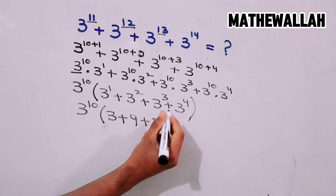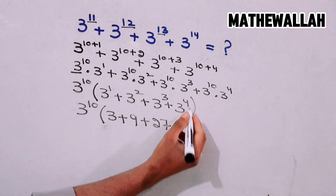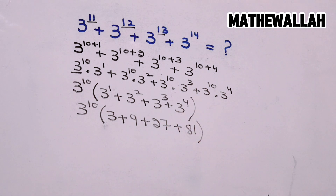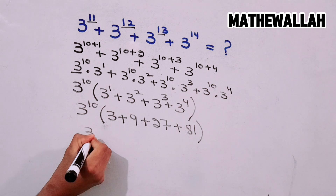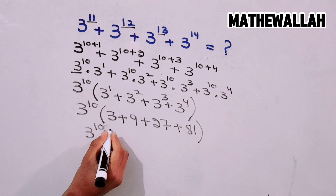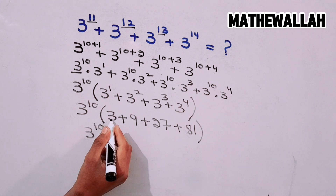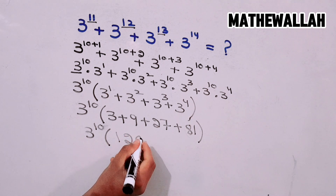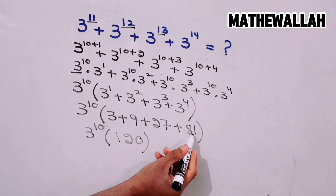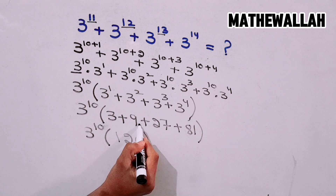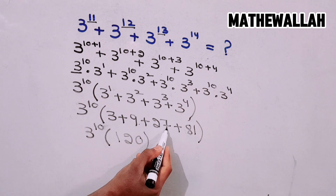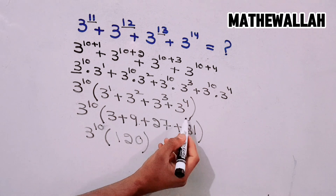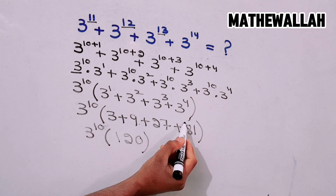3 power 4 is equal to 81. So inside the bracket we add: 1 plus 9 is 10, 10 plus 27 is 37, 37 plus 81 is 120. So the bracket equals 120, giving us 3 power 10 multiplied by 120.